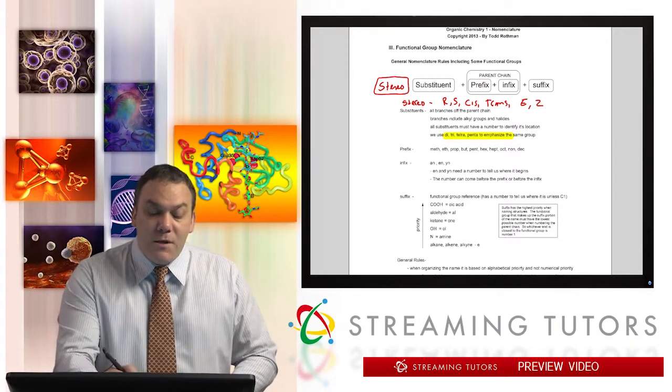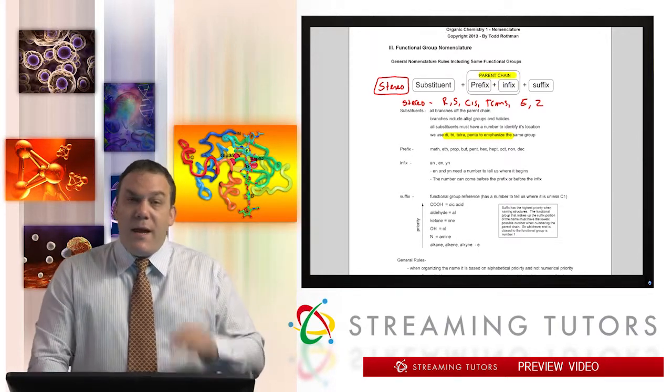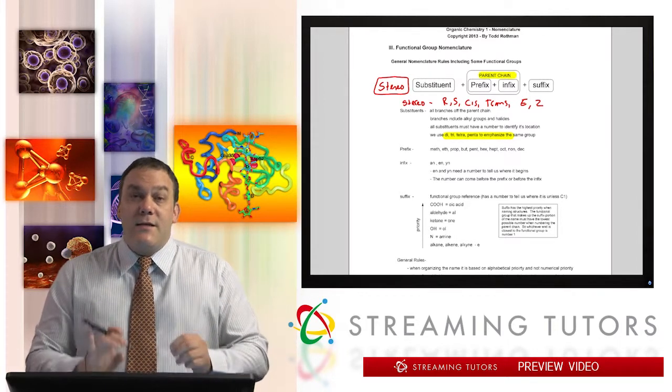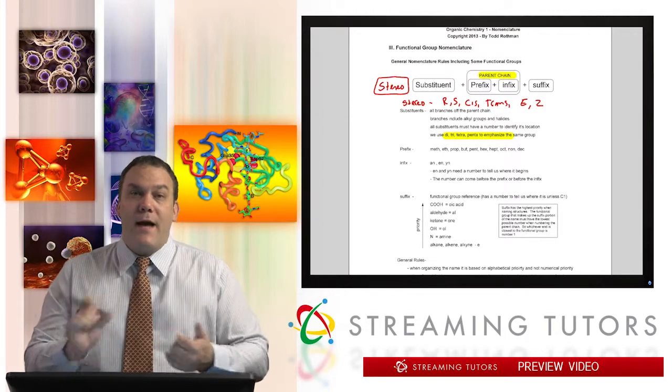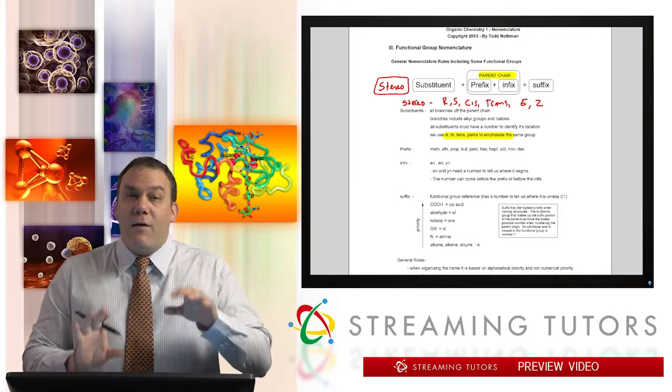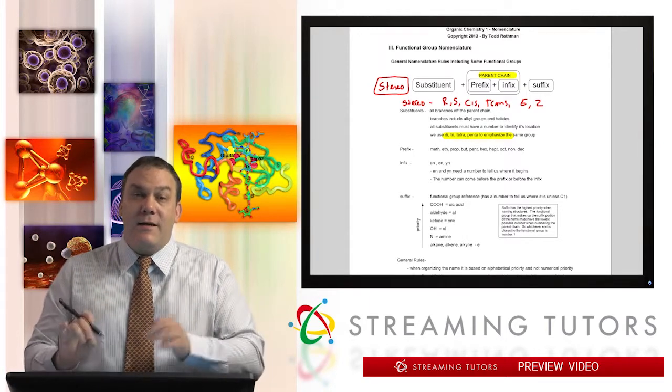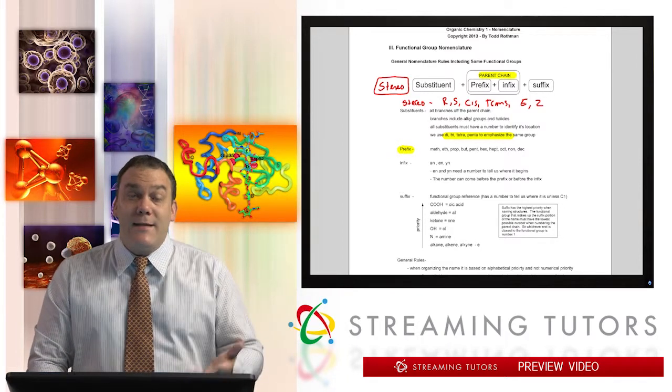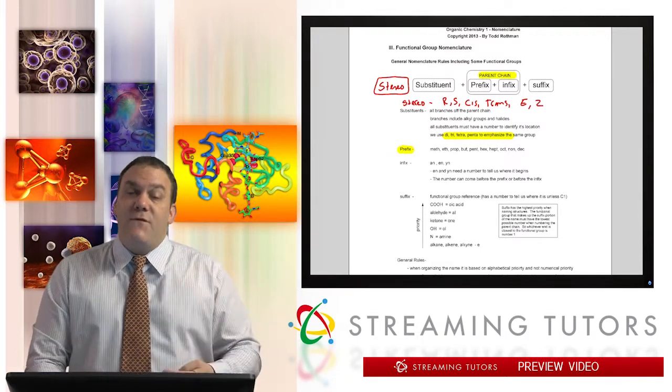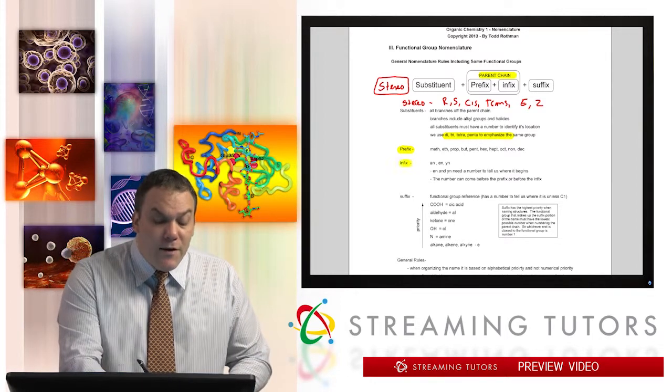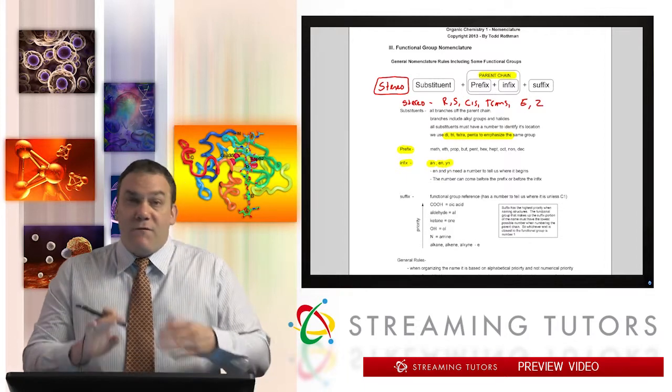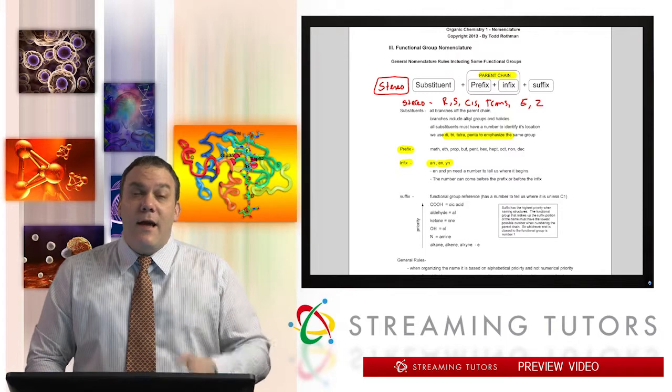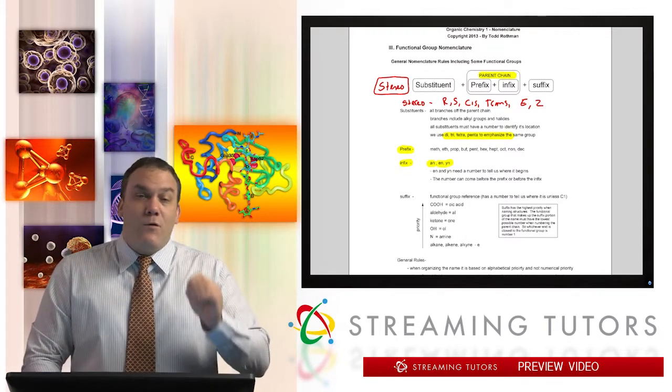Don't forget that you always have to say where the substituent is located by using a number. Now, as far as the parent goes, with the parent there are two parts that you can think of: the prefix and the infix. So the prefix is like 'alk,' like meth, eth, prop, but, pent, hex, hept, and so on. Now that is not with the 'a-n-e' or 'e-n-e' because that's the infix. So the prefix is just what's the number of carbons. If it's five, it's pent. And then you go into the infix to figure out the next part of the name. The next part of the name is either 'ane,' 'ene,' or 'yne.' If there's all single bonds, there's no double bond, it's an 'ane.' If there's a triple, it's a 'yne.' If there's a double, it's an 'ene.'